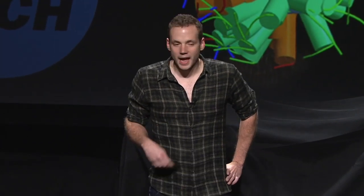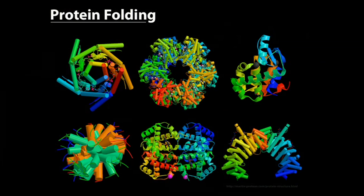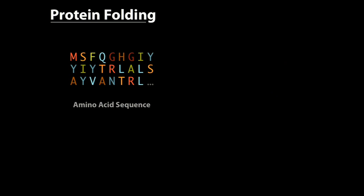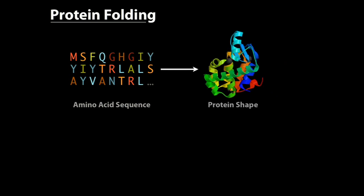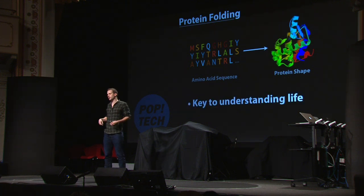Let me give you an example: protein folding. As you know, proteins are these beautiful molecules that fold into complex and intricate shapes in each one of our cells. The protein folding problem is: given a sequence of amino acids — the building blocks of proteins — we want to find the three-dimensional shape that they fold into, and that determines its biological function in the cell.